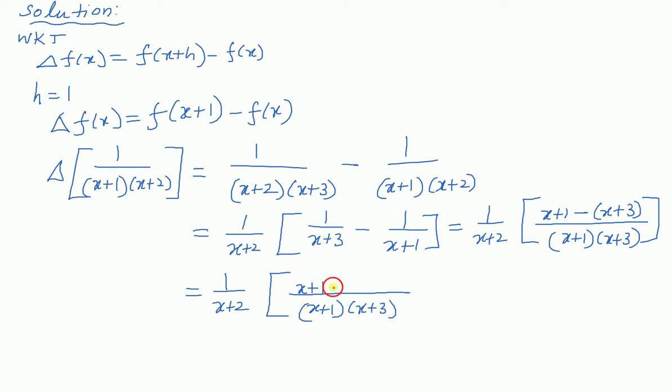In the numerator: x plus 1 minus x plus 3, so x minus x cancels. We get 1 minus 3 which is minus 2.